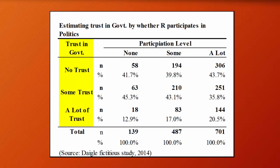So you could see, for example, among those who don't participate, 12.9% have a lot of trust in government. And among those who do participate a lot, 20.5% have a lot of trust in government.